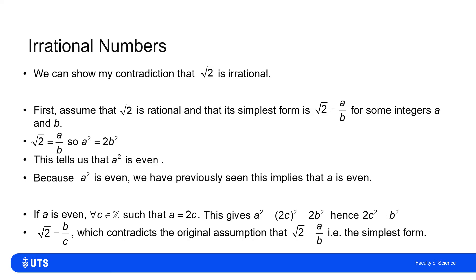So the part which is wrong is that square root of two being rational in the first place. So we've proven that the square root of two is irrational.